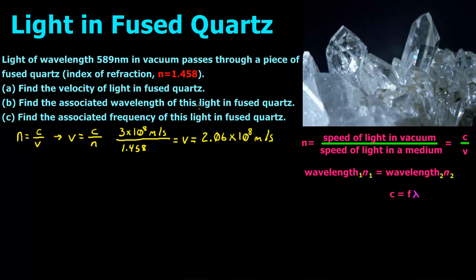For part B it says find the associated wavelength of this light in fused quartz. We're going to use this second equation: wavelength 1, which is our 589 nanometers, times N1, which is just going to be 1, equals our new wavelength while the light is in the fused quartz, times N2, which is the index of refraction for fused quartz.